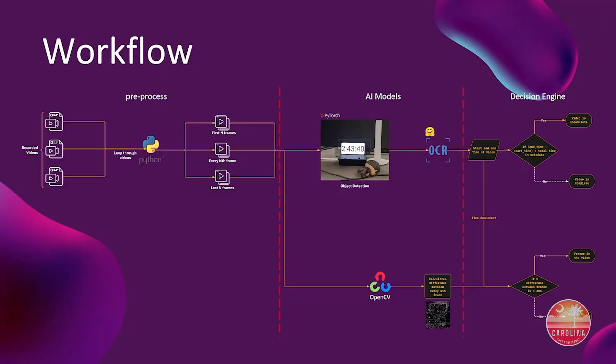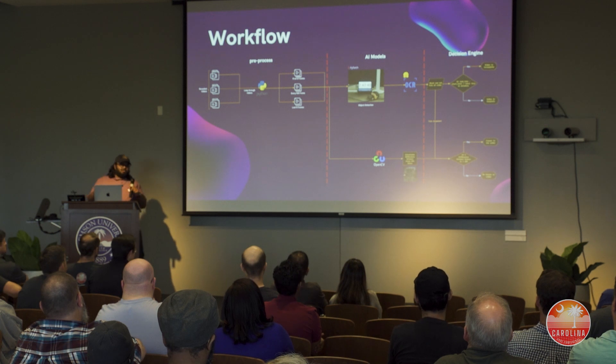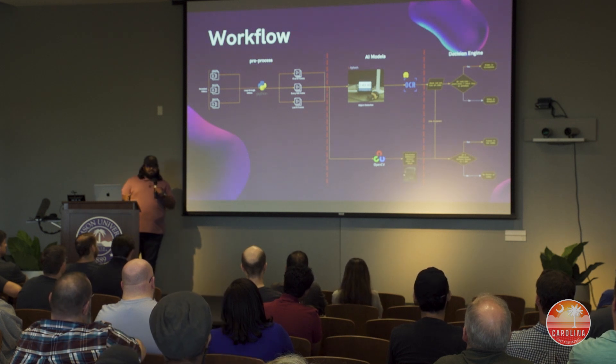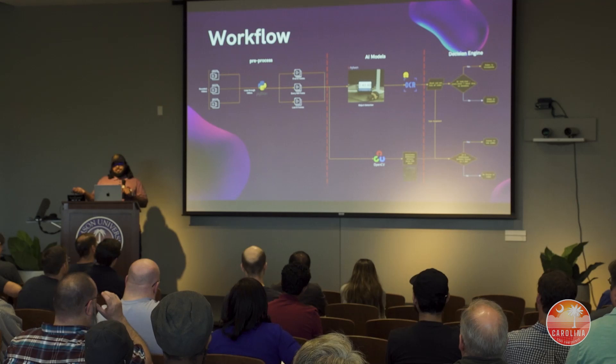Here's how our workflow looked. The initial part is a pre-processing Python function that takes in those videos, loops through them, and creates frames — all of this happens through a configuration file so you don't have to do any of it manually. We have AI models doing object detection to find where the clock is in the frame, and then doing OCR on top of it. OCR is optical character recognition — the same technology most phones use now to scan text — and that's what it was doing to extract the time. Then we had a decision engine which, based on the extracted parameters, tried to identify whether a video was continuous, had no missing content, was complete, and what the gaps were between each chunk being uploaded.